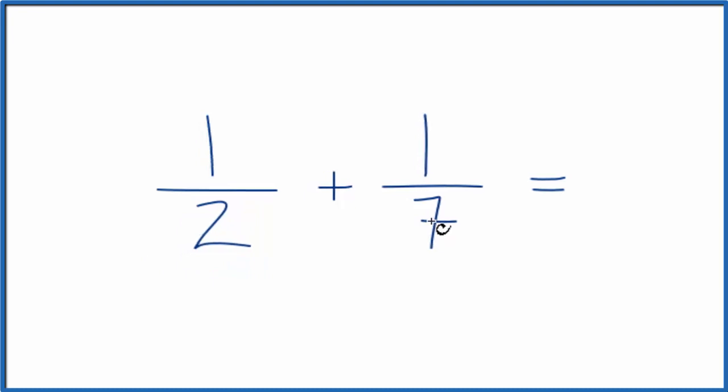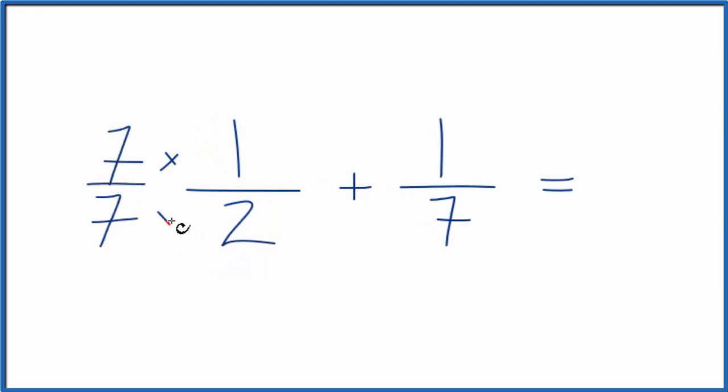So what we could do is we could take one-half, multiply by seven over seven, and then here, let's multiply one-seventh by two over two. We're not changing the value here of one-half or one-seventh.